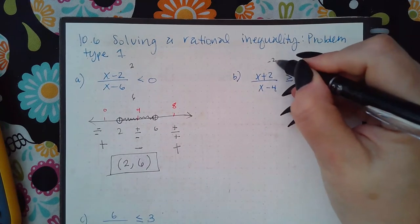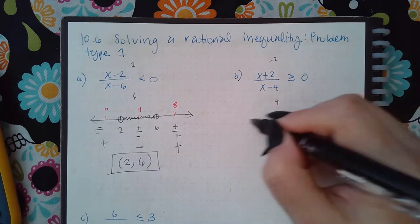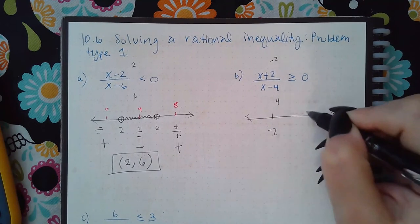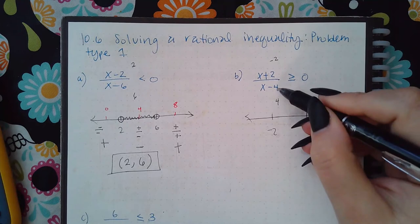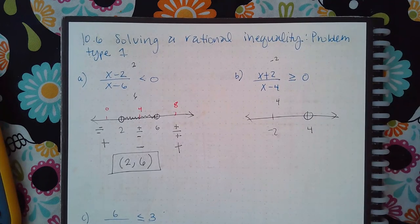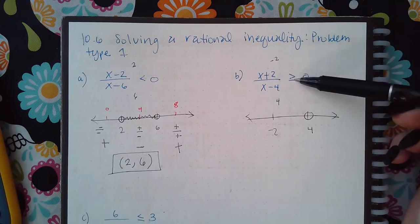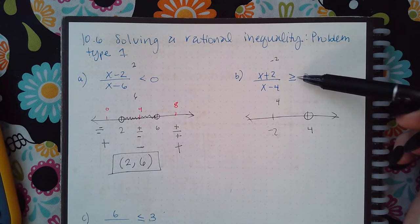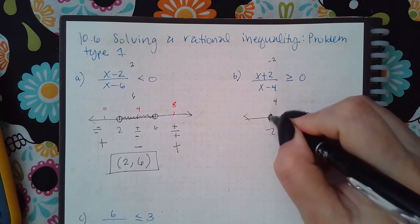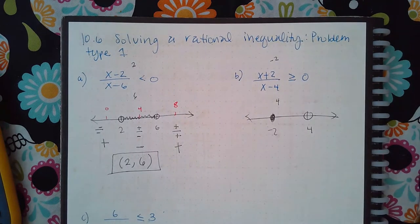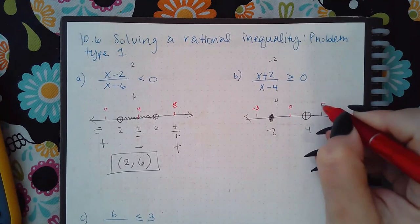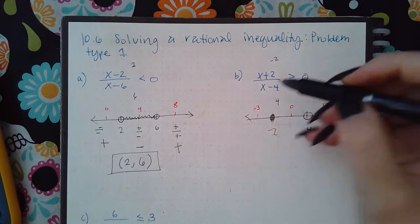For this second example, setting the numerator equal to zero gives negative two, and the denominator equal to zero gives four. The four, coming from the denominator, will always have an open dot. The numerator has a bar in the symbol, so there will be a solid dot at negative two. Test points are negative three, zero, and five.